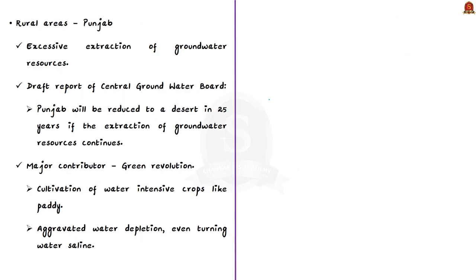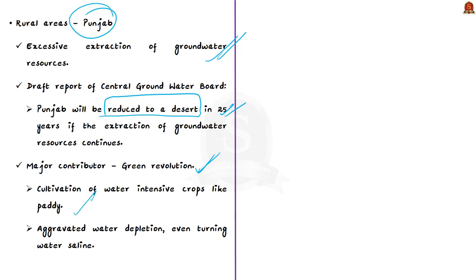For rural areas, the author takes the example of Punjab. The main problem is excessive extraction of groundwater resources. The Central Groundwater Board concluded that if groundwater extraction continues at the current rate, Punjab would be reduced to a desert in 25 years. The Green Revolution also aggravated the situation by promoting cultivation of water-intensive crops like paddy, further depleting groundwater and increasing salinity. These are the causative factors for water crisis in rural India.